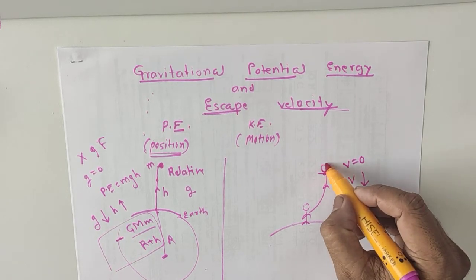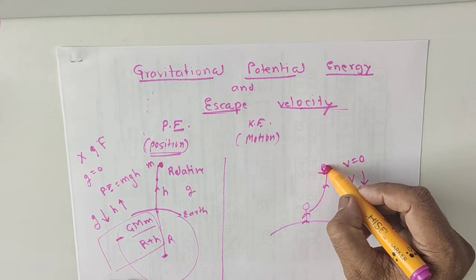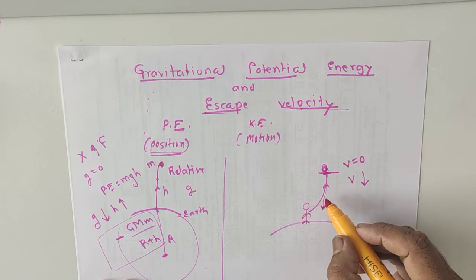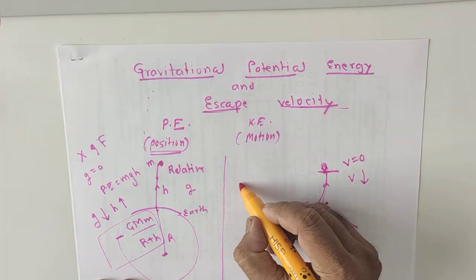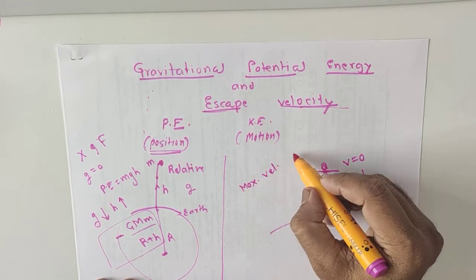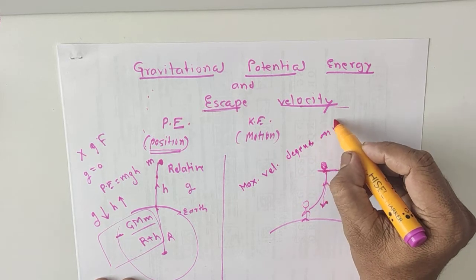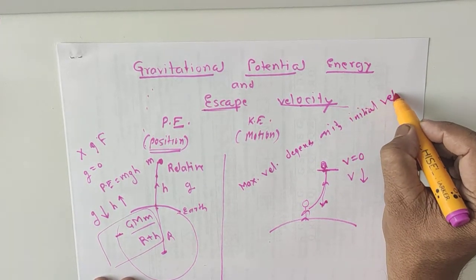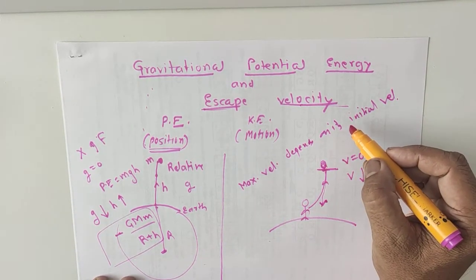After that the stone starts falling down. Maximum height depends on its initial velocity — very important. Higher the initial velocity, larger is the maximum height reached by the ball.